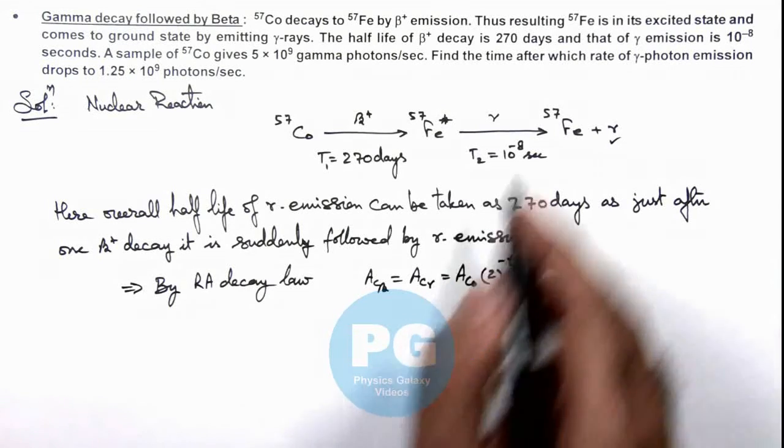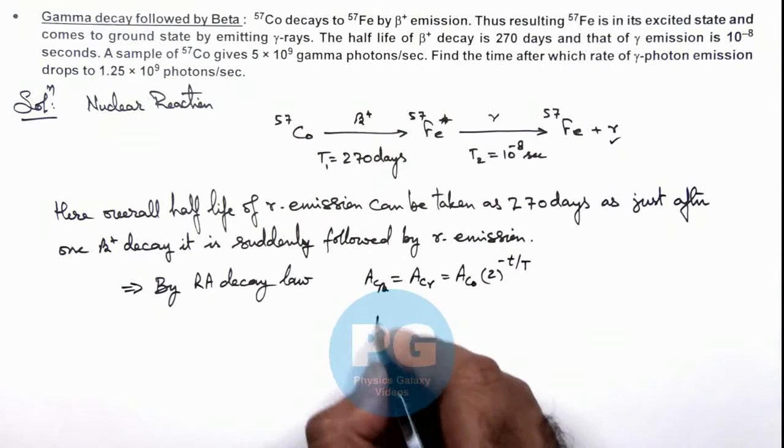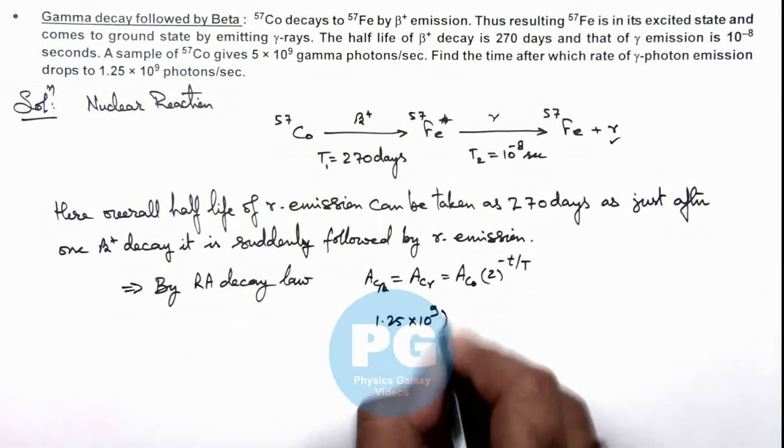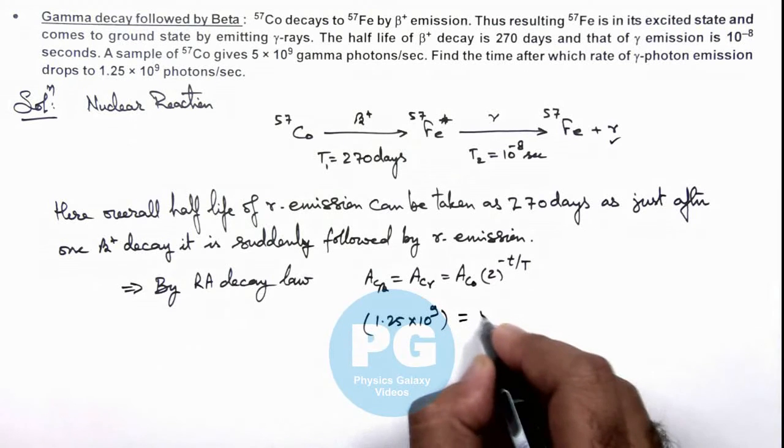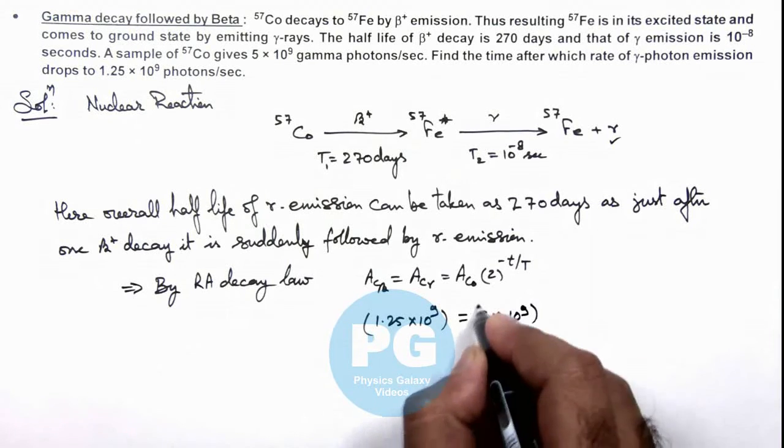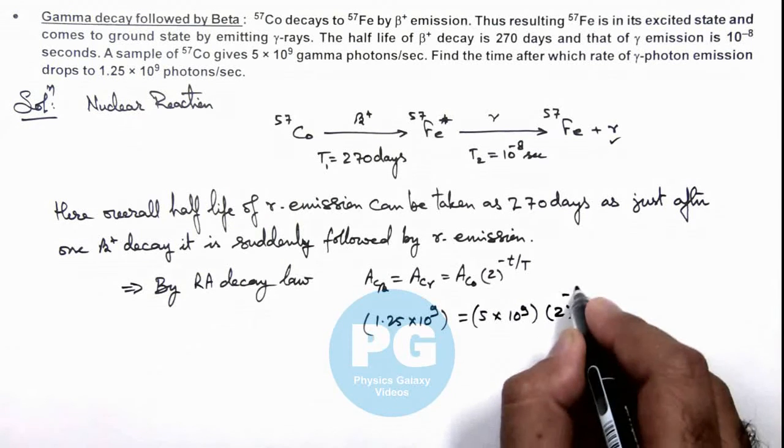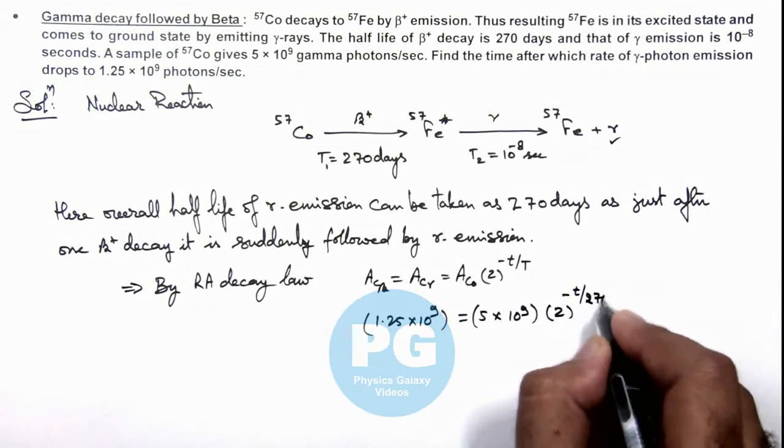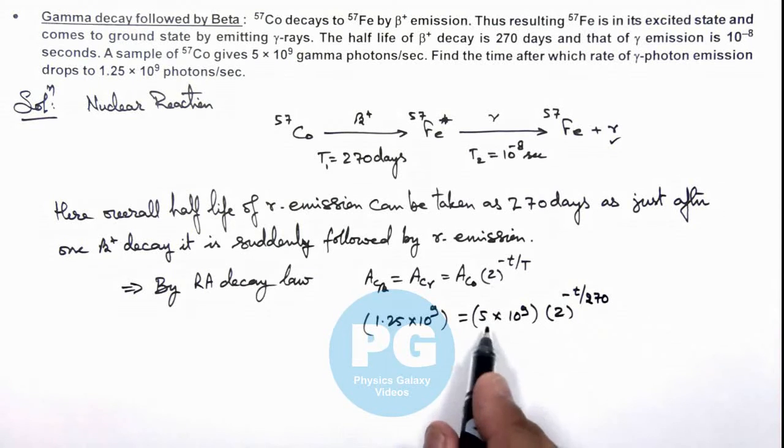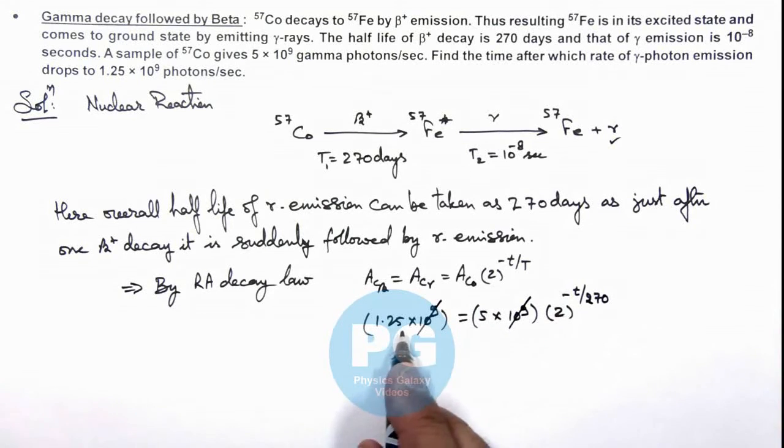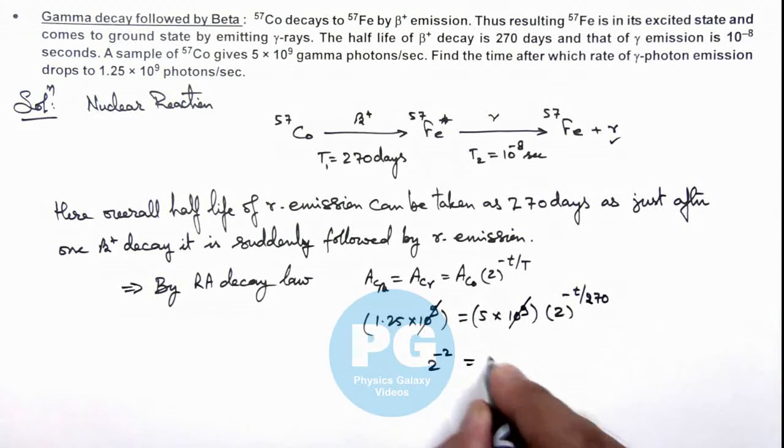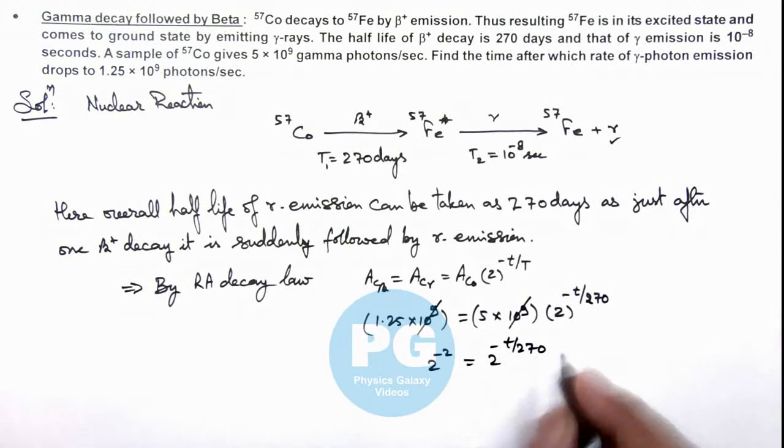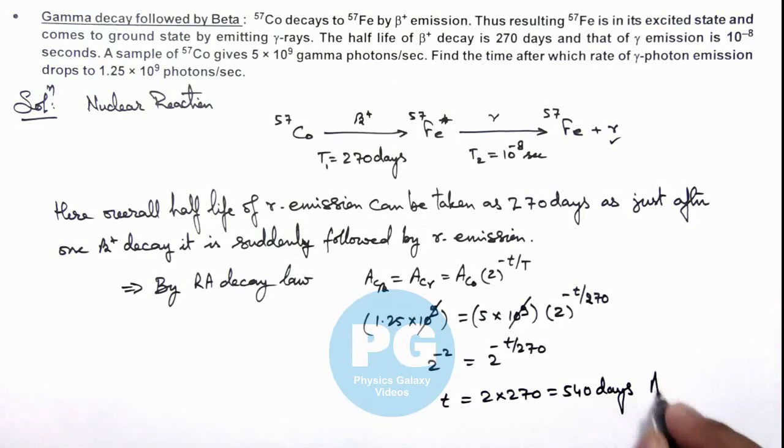So here we can write: after time t, if activity is 1.25 into 10 to the power 9, and initial activity was 5 into 10 to the power 9, multiplied by 2 to the power minus t upon 270 days, then here we can see 10 to the power 9 gets cancelled out, and this is 2 to the power minus 2, which is equal to 2 to the power minus t by 270. On taking natural log on both sides, this gives the time is equal to 2 into 270, which is equal to 540 days. That is the result of this problem.